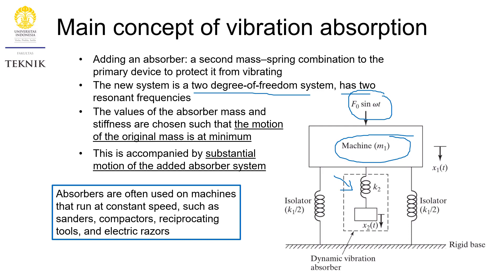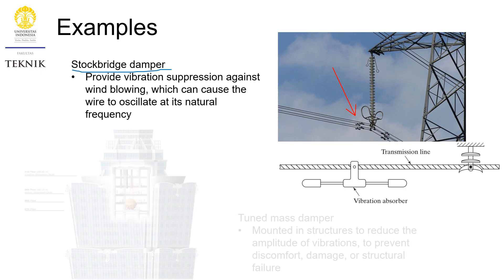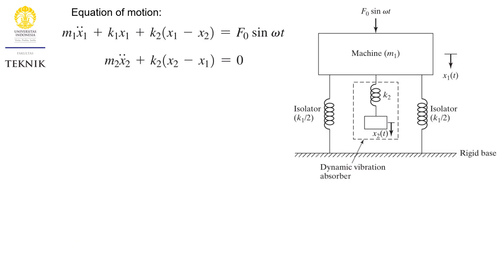Among other examples, we can find vibration absorbers in the Stockbridge damper — the small devices you can see on transmission lines — as well as in tuned mass dampers. A tuned mass damper is a giant mass added to structures to make sure that a huge structure such as the Taipei 101 in Taiwan is not vibrating too much.